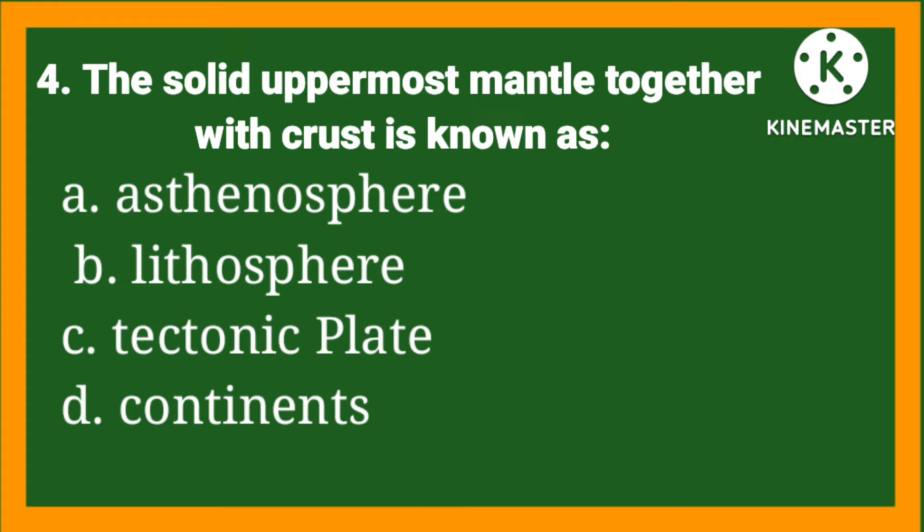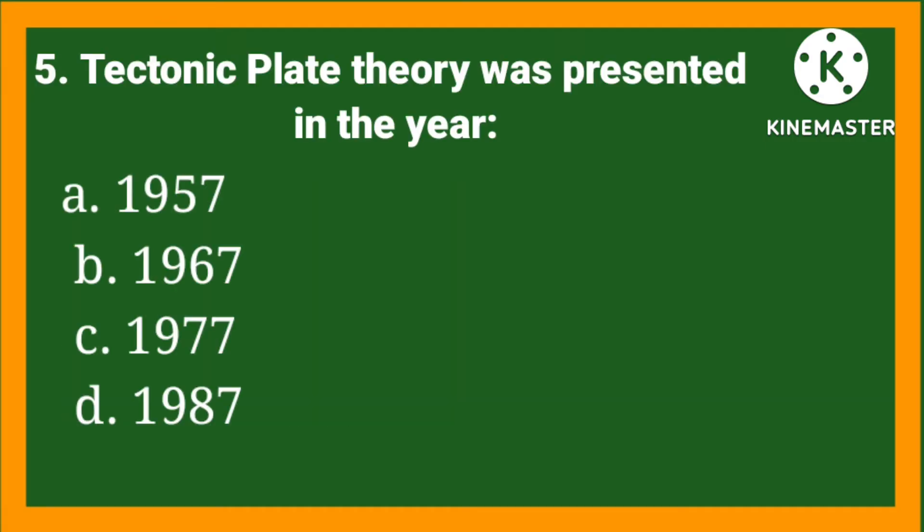MCQ number four: The solid uppermost mantle together with crust is known as — option A: asthenosphere, option B: lithosphere, option C: tectonic plates, option D: continents. The right option is B, lithosphere.